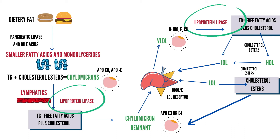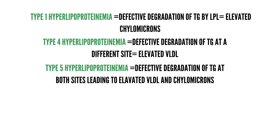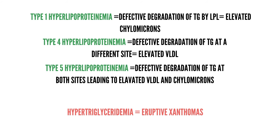In summary: type 1 hyperlipoproteinemia is due to defective degradation of triglycerides by lipoprotein lipase, leading to elevated chylomicrons. Type 4 hyperlipoproteinemia is due to defective degradation of triglycerides at a different site, leading to elevated VLDL. Type 5 hyperlipoproteinemia involves defective degradation at both sites, leading to elevated VLDL and chylomicrons. Since VLDL and chylomicrons are rich in triglycerides, all of these result in hypertriglyceridemia and eruptive xanthomas, and importantly they increase the risk of recurrent pancreatitis but not atherosclerotic disease.